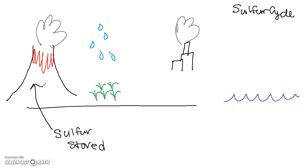Or plants can uptake it from the soil. Or it can be released through the ocean. And a little bit of sulfur will be released into the atmosphere as sulfur dioxide.